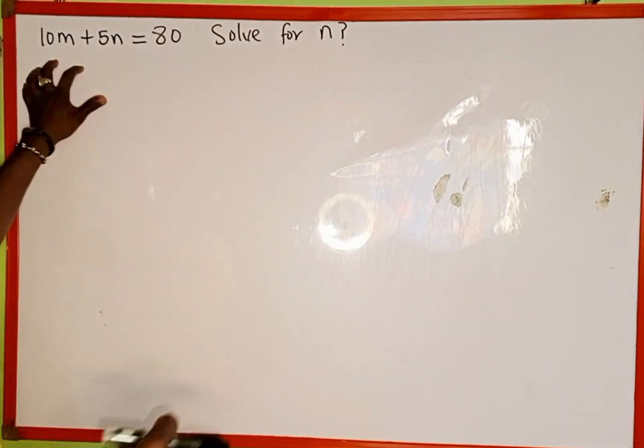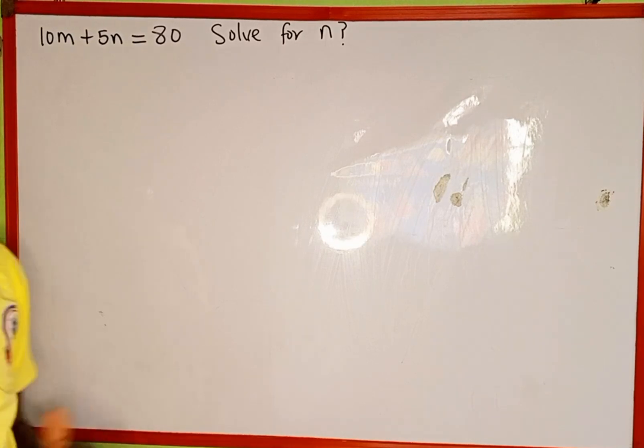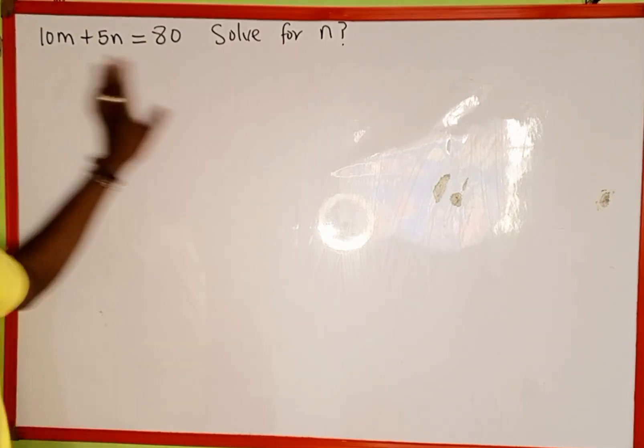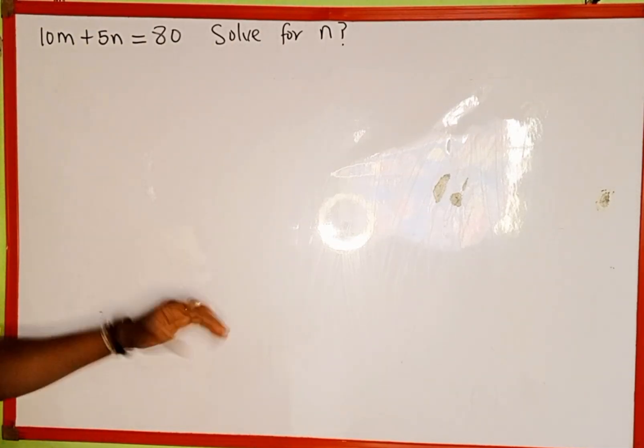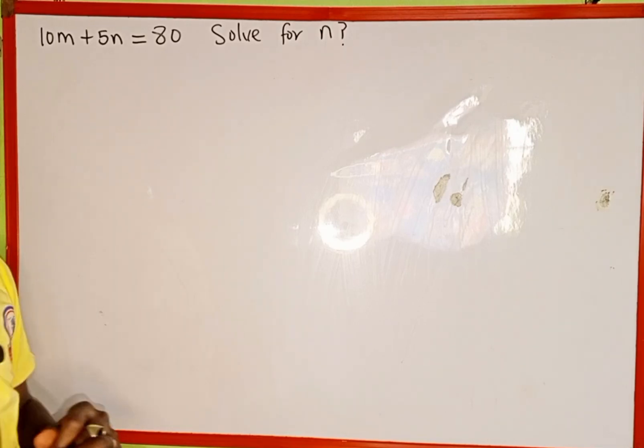The given equation is 10m plus 5n equals 80, and we're asked to solve for the value of n. This is the same as making n the subject of the formula.